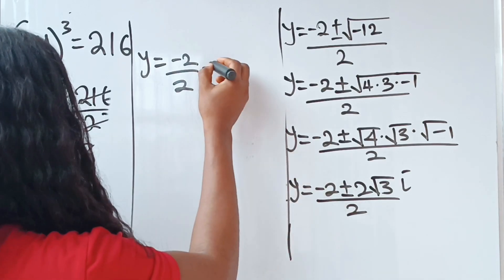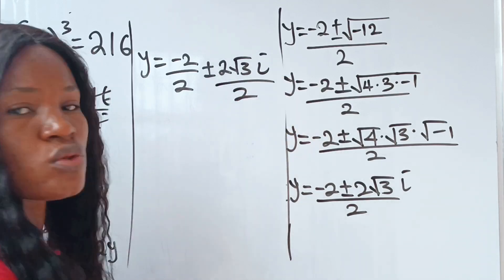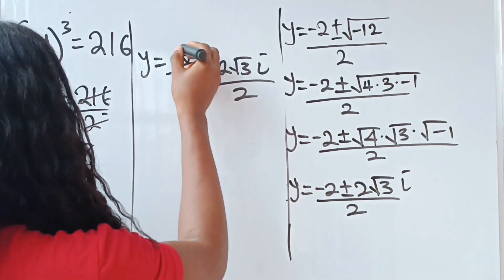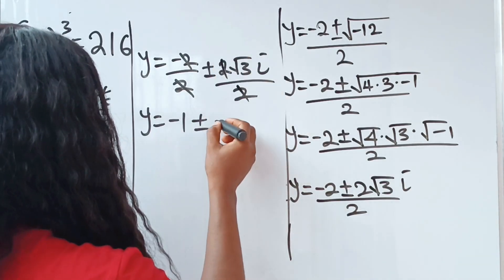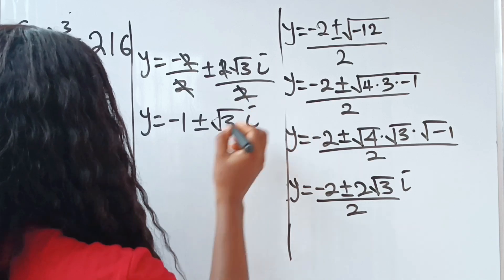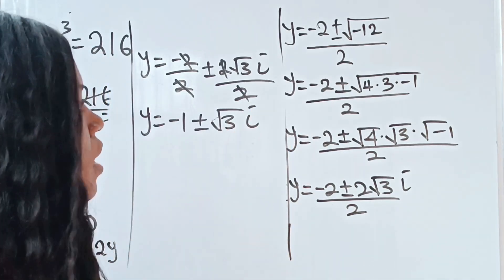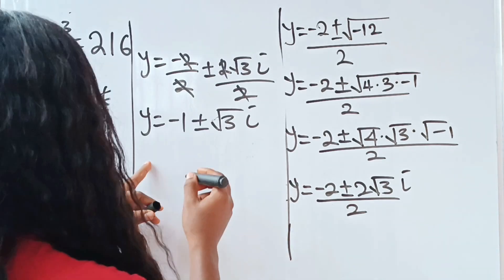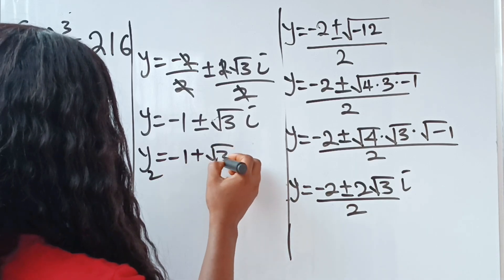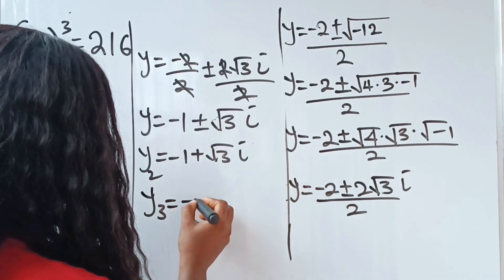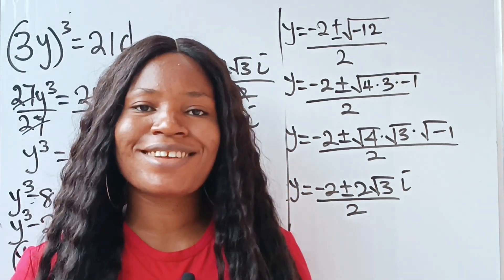Dividing through by 2 we get y equals minus 1 plus or minus √3·i. Therefore the first value is y equals 2, the second value is y equals minus 1 plus √3·i, and the third value is y equals minus 1 minus √3·i. Thank you so much for watching and have a lovely day.